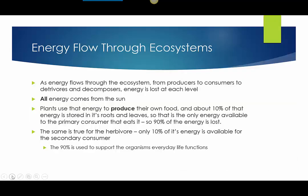As energy flows through the ecosystem from producers to consumers to detritivores and decomposers, at every level energy is lost. All energy initially comes from the sun. Plants use that energy to produce their own food, and only about 10% of that energy is stored in their roots and leaves — that's the only energy available to a primary consumer that eats it. So 90% of the energy that producers get from the sun ends up lost just through basic survival.